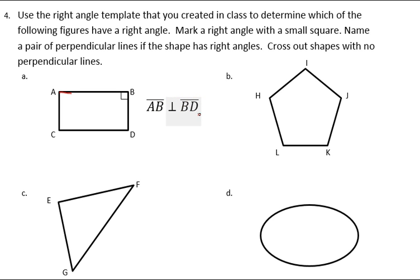So here's line segment AB, and here's line segment BD. And where they intersect, they create a right angle. So this is how I would write that. I'd identify line segment AB and line segment BD and put the perpendicular sign between them.